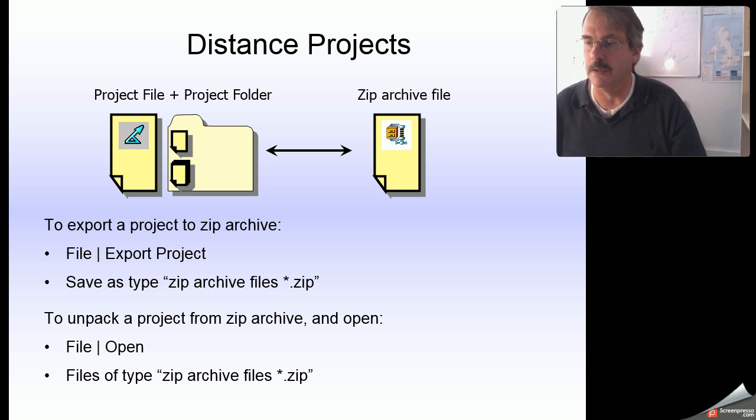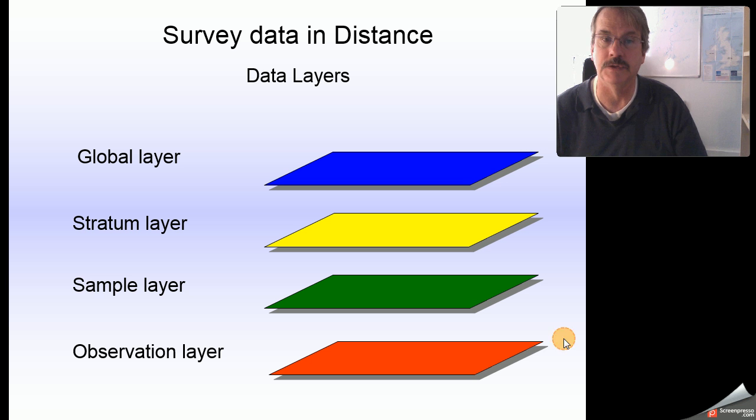This is a depiction of that archiving process that I described a minute ago. As I said, you have a file plus a folder with many other files in it. That can all be compressed into what's called a zip archive file by using this export project feature in the main menu. You can then unpack that project by opening files with the .zip extension.